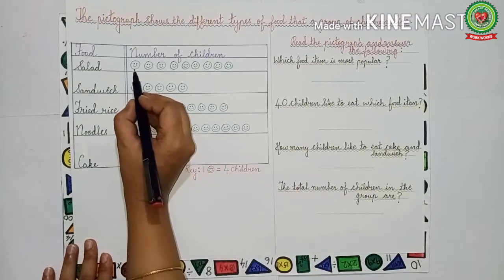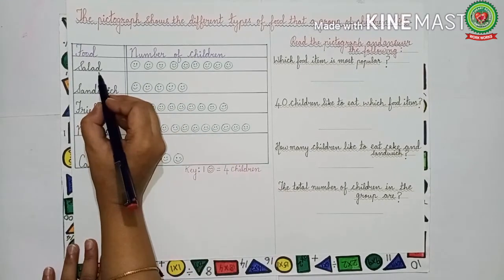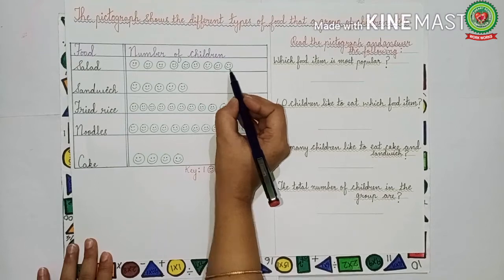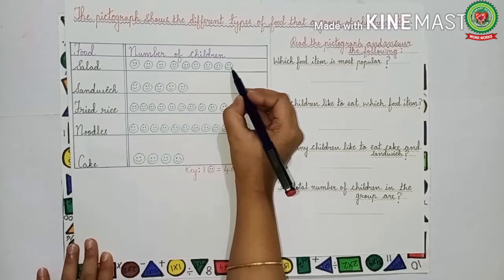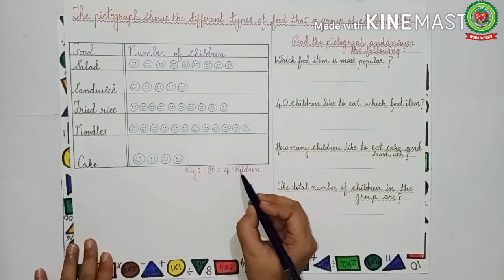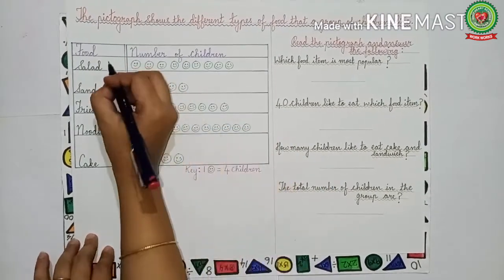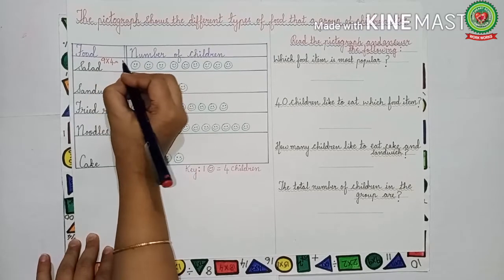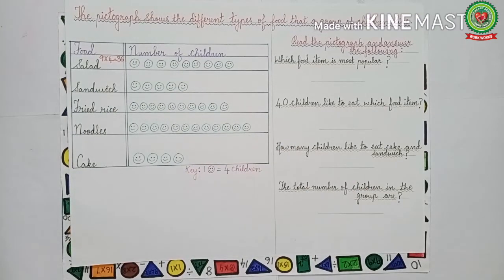One smiley face represents four children. Salad is liked by how many children? Let us count the smiley faces: nine faces have been drawn. We know that one smiley face is equal to four children, so we have to multiply nine by four. Nine multiplied by four is equal to 36. That means 36 children like salad.